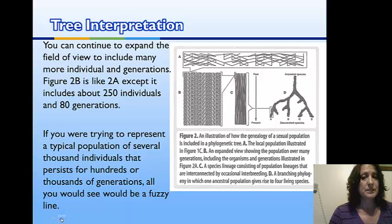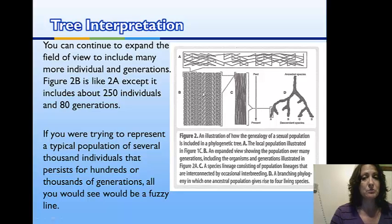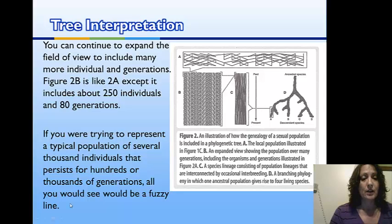If I apply this to what we're seeing on a tree — if we take this and magnify it so we're now seeing about 80 generations of about 250 individuals in each generation, and then continue to expand to hundreds of thousands of generations — you can see that you no longer see the individual lines. You just have this braided effect, which would just be fuzzy. And so now I can apply that to my tree.